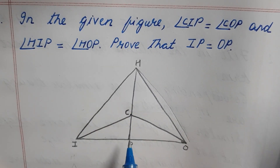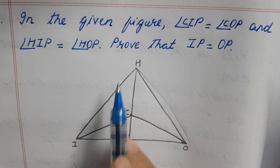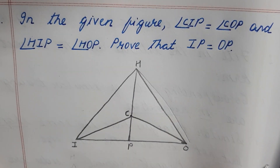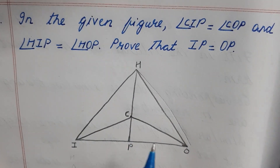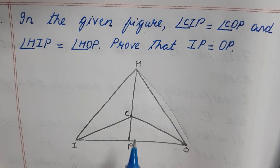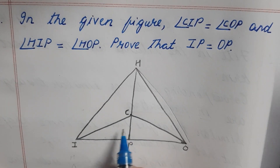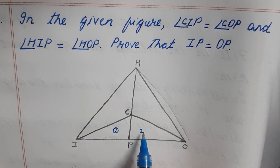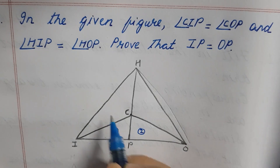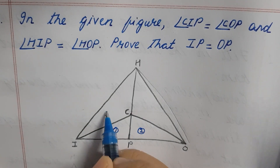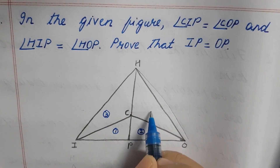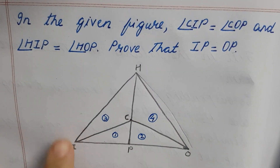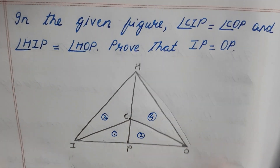If you look at the first triangle, we see two triangles, but actually there are four triangles. This is one triangle, this is one triangle, this is one triangle, and this is one triangle. So now we have four triangles.